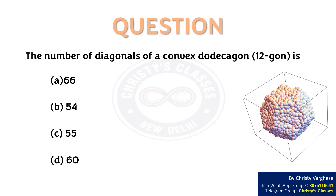In this video, let us discuss a question on diagonals in a convex polygon. The number of diagonals of a convex dodecagon is: a) 66, b) 54, c) 55, or d) 60.